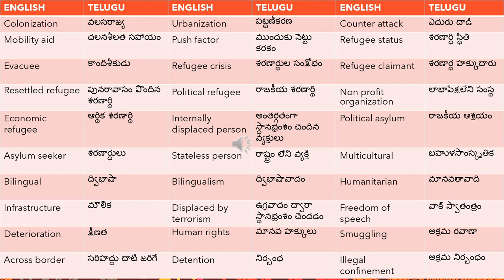Refugee claimant means 'saranarthi hakku dharu'. Re-settled refugee means 'punarvasoam pundina saranarthi'. Political refugee means 'rajakiyya saranarthi' — 'rajakiyam' means politics. Non-profit organization means 'labha apeksha leheni samstha'. Economic refugee means 'arthika saranarthi' — 'arthikam' means economic. Internally displaced person means 'antaragatanga sthana bramsham chendina vyakthulu' — displaced people within a country.